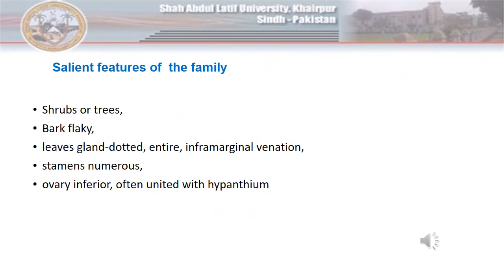The family is generally characterized by shrubs and trees with flaky bark. If you remove the bark from the trunk, it should break into pieces with little pressure. The members of this family possess gland-dotted leaves. They possess oil glands in their leaves which generally produce terpenes. The leaves of the plant may be entire with inframarginal venation.